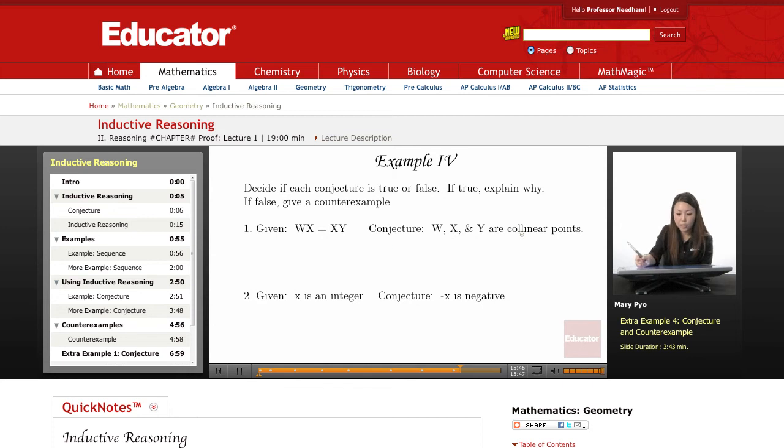So the conjecture is saying, if I have W, X—here's W, point W, point X, and point Y—W, X, and Y, they're collinear. So WX equals XY, right?